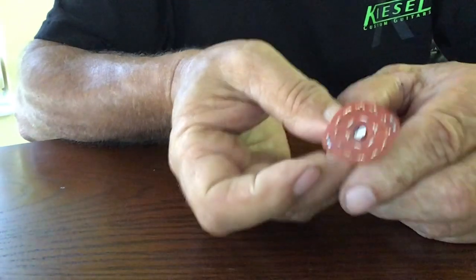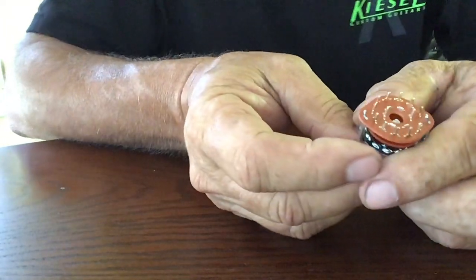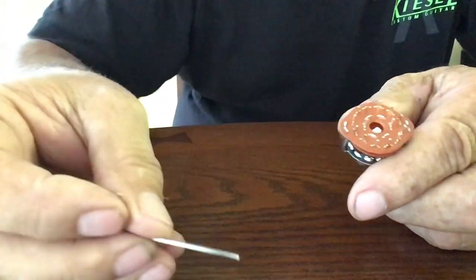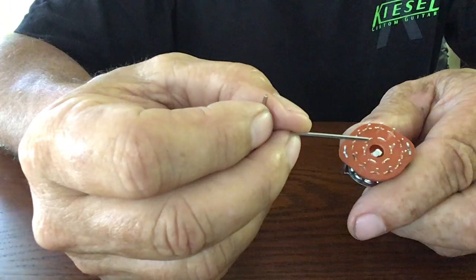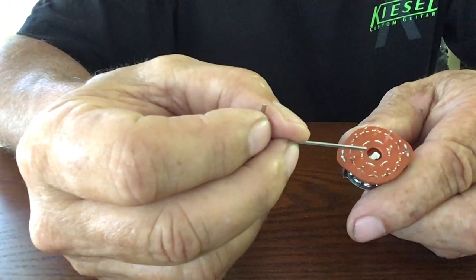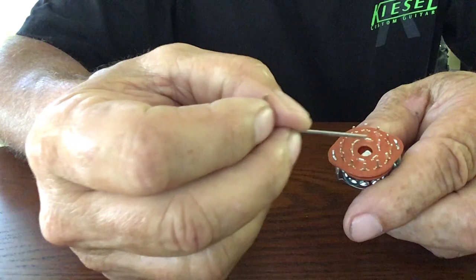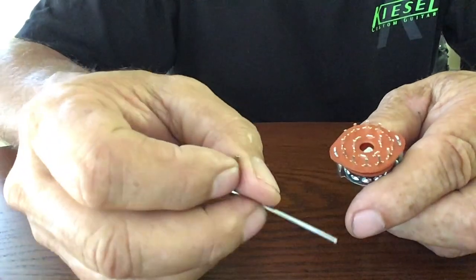When we look at the rotary switch, the first thing you have to do is get the right one. This is a six-way rotary switch. If you look where I'm touching here, there's a lug right here and a lug across from it. This is the one you want. You want the two-lug model.